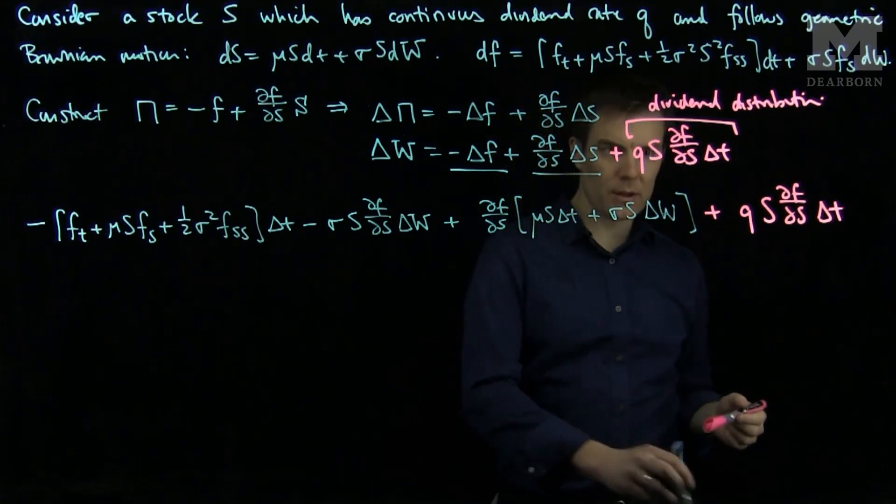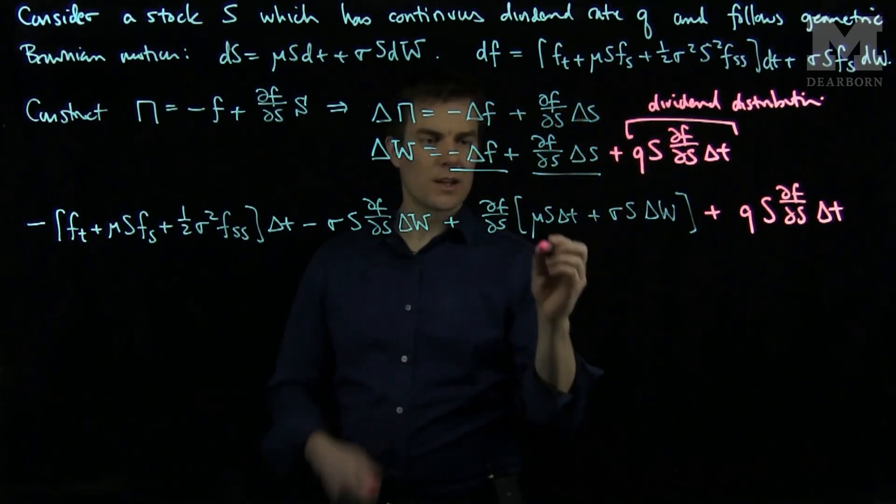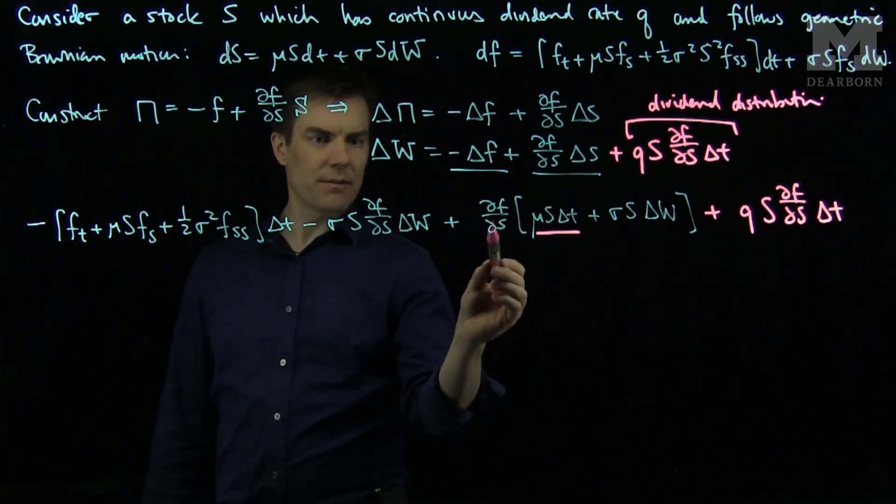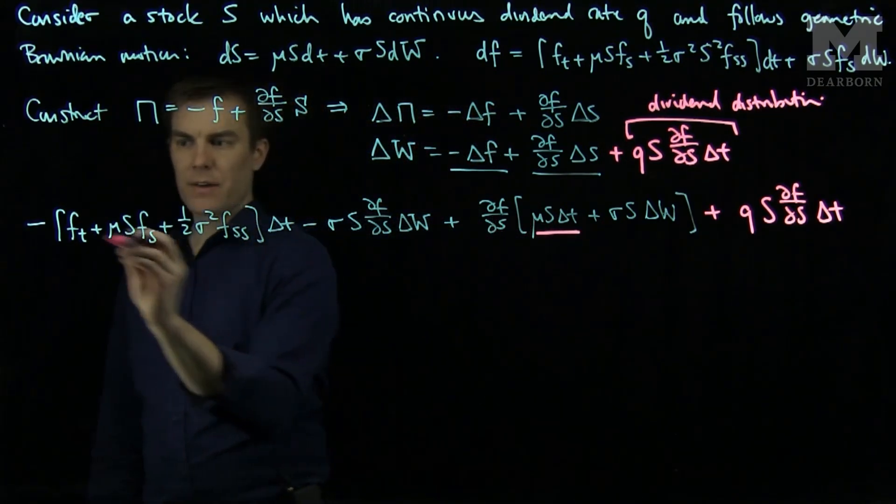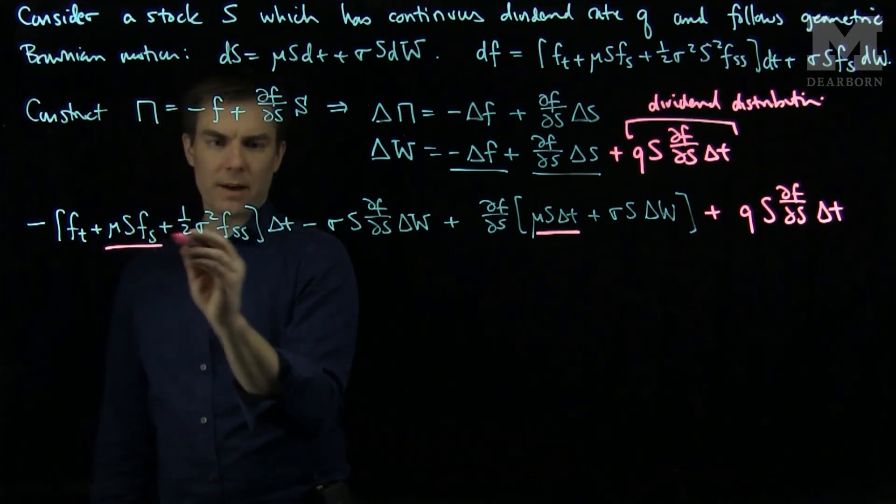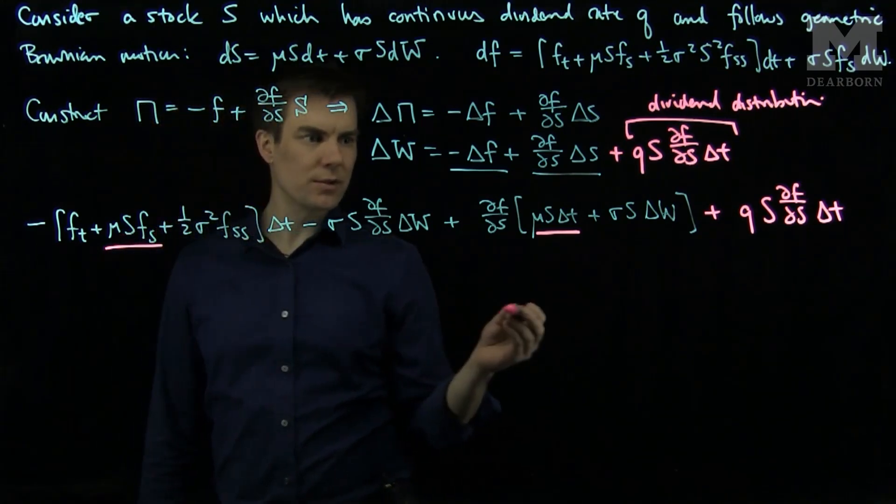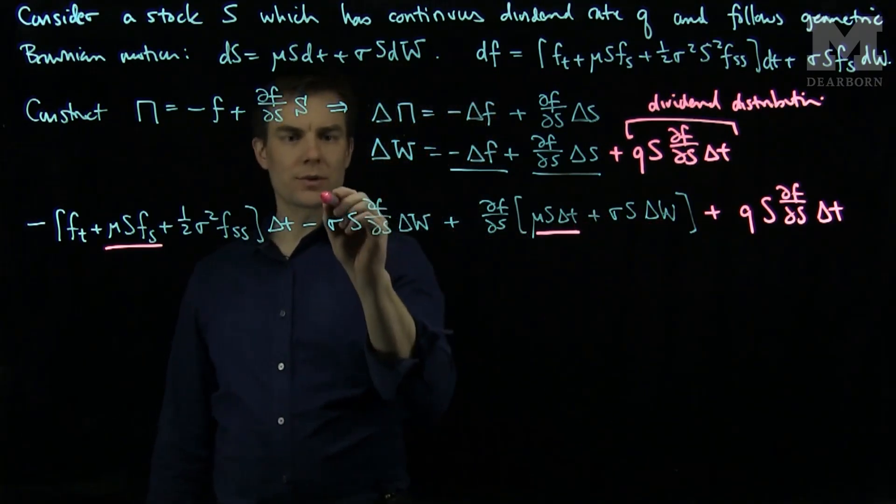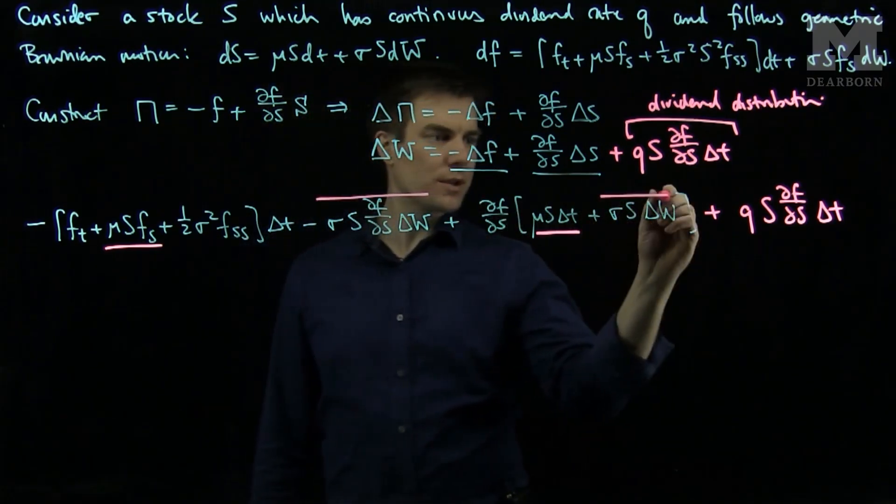If we look at the like terms, we will see that this term over here is mu S delta t Fs. And I will have a negative mu S Fs delta t. So those terms will cancel. And then these sigma S dW terms will also cancel. So this term will cancel with this term.